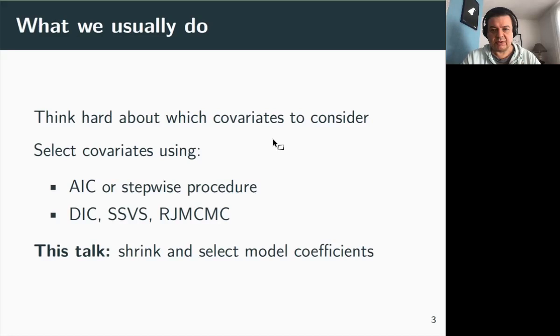Once you've passed this first step, then to select covariates you have several approaches possible. If possible, you may use the AIC or stepwise procedures if you're a frequentist. Alternatively, you may use the deviance information criterion, stochastic search variable selection, or reversible jump MCMC to name just a few. In this talk, we propose to explore a different approach, namely to shrink model parameters in order to select them, to select the corresponding covariates.